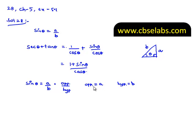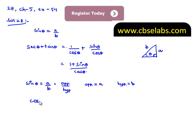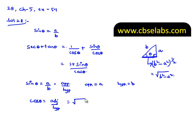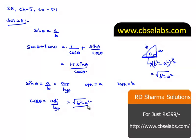Now, we need to find cos theta. We know that cos theta is the adjacent side by hypotenuse. We need to find the value of the adjacent side. As the triangle is a right angle triangle, the adjacent side equals the square root of hypotenuse squared minus opposite side squared, which is root of b squared minus a squared. Therefore, cos theta equals root of b squared minus a squared divided by b.